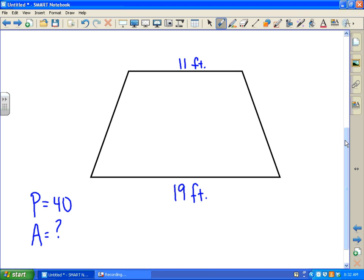So we have 11 plus 19, that would be 30. And so if you take 40 minus the 30 for the two bases, then you have 10 left for the two.